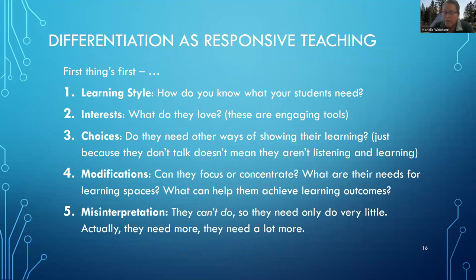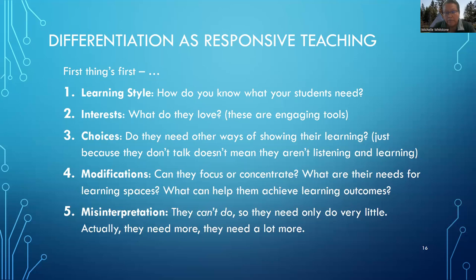Differentiation as responsive teaching — first things first: you need to learn about the learning styles. How do you know what your students need? The interests — what do they love? These are all engaging tools. Choices — do they need other ways of showing their learning? Just because they don't talk doesn't mean they aren't listening and learning. And modifications — can they focus or concentrate? What are their needs for learning spaces? What can help them achieve learning outcomes? A common misinterpretation is: they can't do, so they need only do very little. Actually, the opposite is true — they need more. More exposure to texts, more opportunities, more ways for us to think outside the box. They're challenging us to think outside the box in responsive teaching.